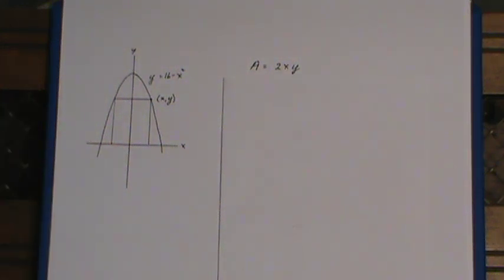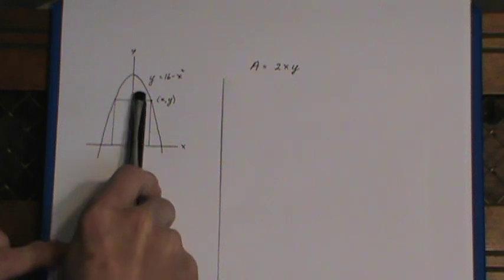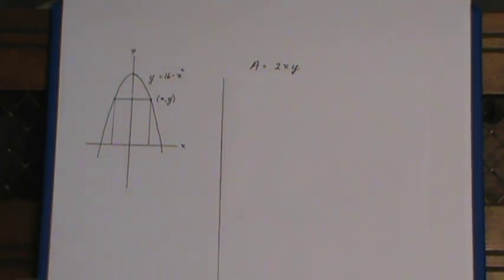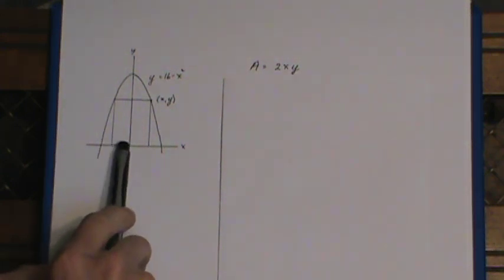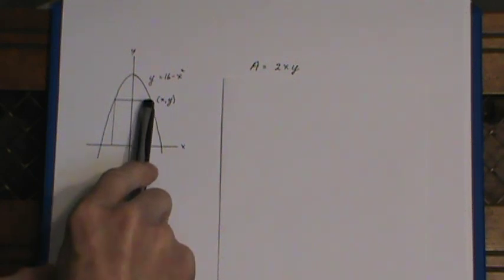And the area of this rectangle that's sitting inside this parabola is simply 2xy. If you take xy as a point on the parabola, you see the base of this rectangle is 2 times x and the height is y.